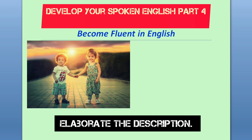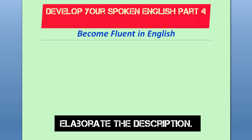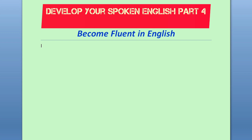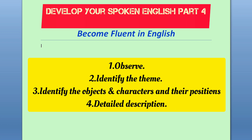I hope you understood how to use the present continuous tense as well as the simple present tense to describe any particular image. Let me quickly recap the four important points: observation — observe the picture; identify the theme; identify the objects, characters, and their positions; then go for detailed description. Follow these four points and you can describe any picture.